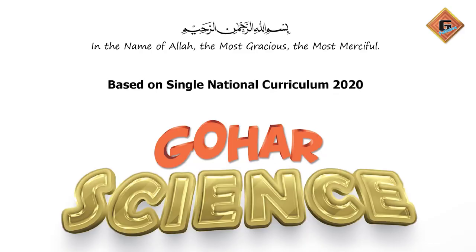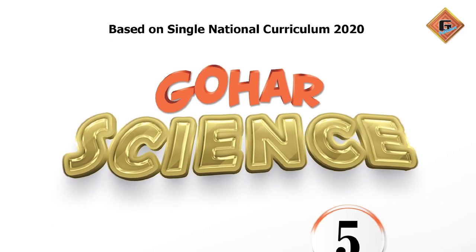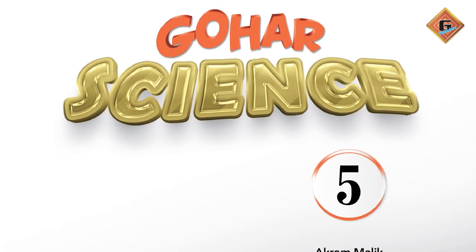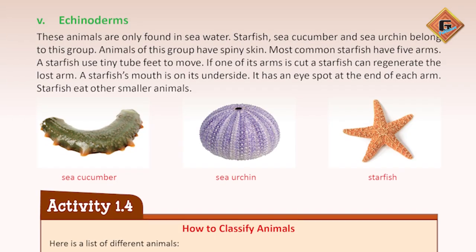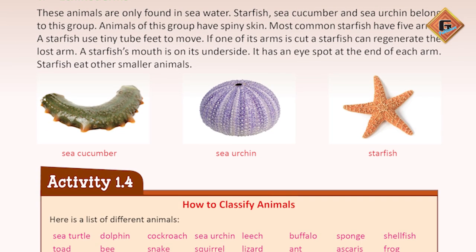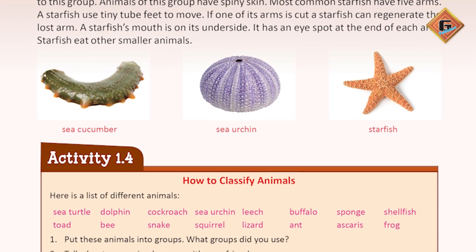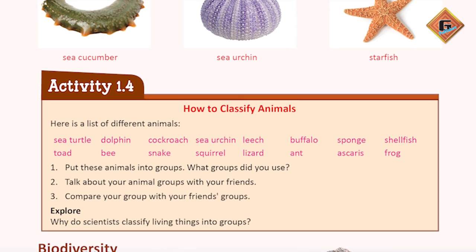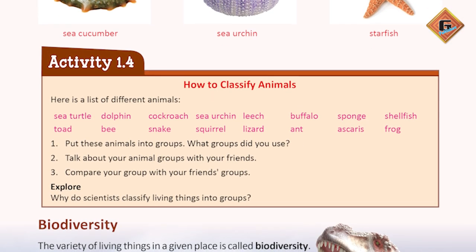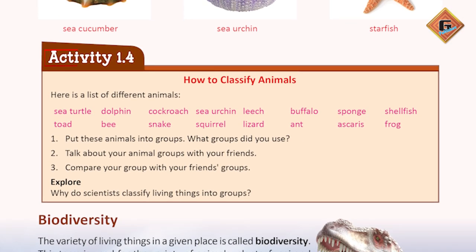Students, today we will continue Gohar Science class 5 chapter 1. We will start a very exciting activity. On page number 17, we will see all the grouping of animals and plants.